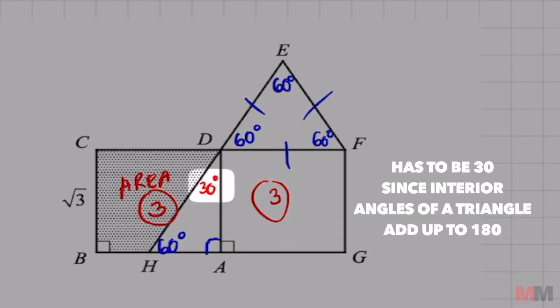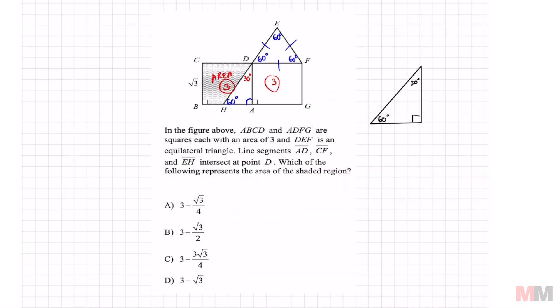Let me redraw that on the side right here. In that triangle, the only measurement that I know is that this long piece right here is the square root of three. And that's because it's a square and the given measurement is right there.